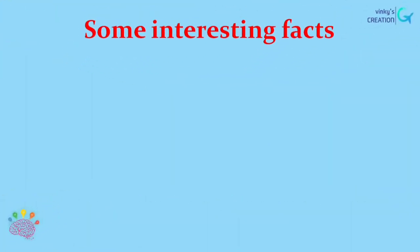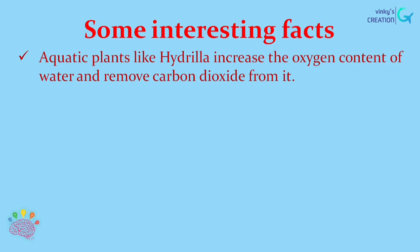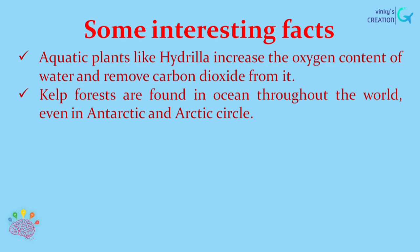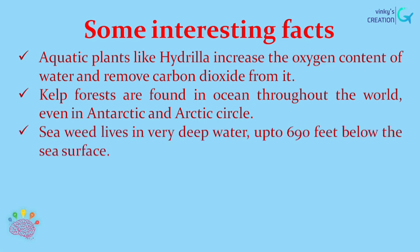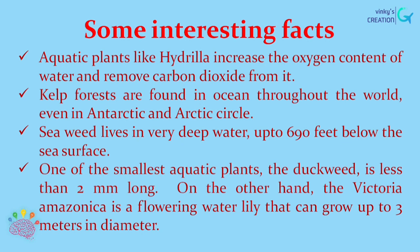Now let's see some interesting facts. Aquatic plants like Hydrilla increase the oxygen content of water and remove carbon dioxide from it. Kelp forests are found in oceans throughout the world, even in the Antarctic and Arctic Circle. Seaweed lives in very deep water, up to 690 feet below the sea surface. One of the smallest aquatic plants, the duckweed, is less than 2 mm long. On the other hand, the Victoria Amazonica is a flowering water lily that can grow up to 3 meters in diameter.